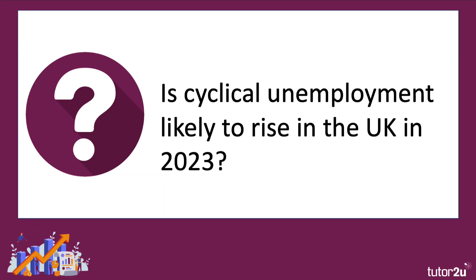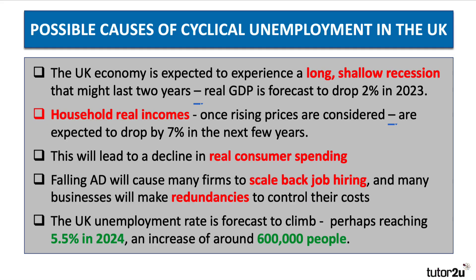Is cyclical unemployment likely to go up in the UK in 2023? I think the answer is yes. The UK economy may already be in recession as we reach the end of 2022, and the forecast is that there could be quite a prolonged, albeit perhaps shallow, recession that might last up to two years. The Bank of England is forecasting that real GDP will drop by 2% in 2023, a contraction in the size of the economy. In large part, this is being caused by a steep fall in real incomes — prices are rising faster than wages. Once we take inflation into account, real income is expected to fall by 7% in the next few years. Higher taxes are also eating into disposable incomes, so real consumer spending on goods and services will fall, bringing down aggregate demand. Many firms will limit how many new jobs they create in 2023, and many businesses will have to make redundancies to control their costs.